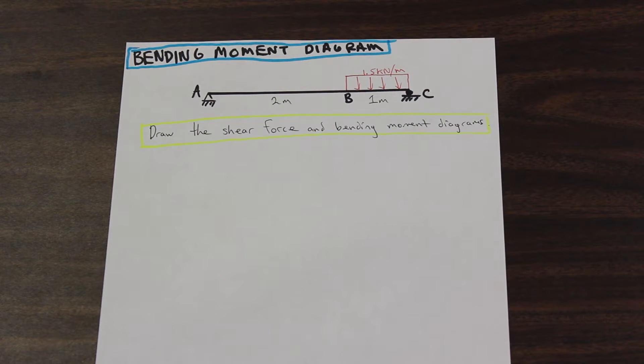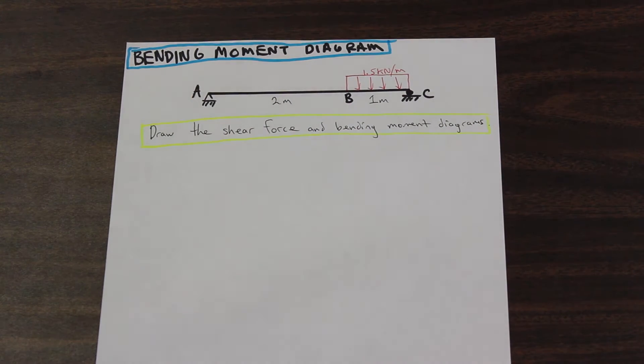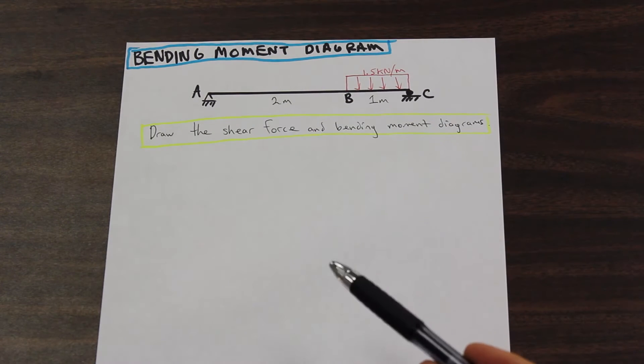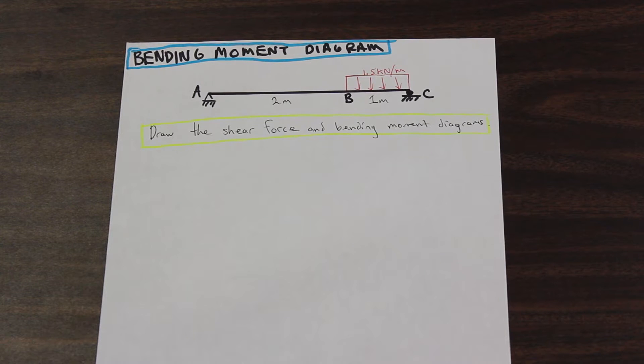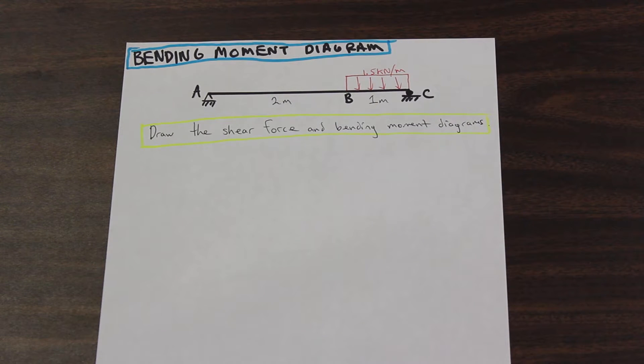How we're going to start a bending moment diagram is first we're going to take a look at what's given to us. And let me also start by saying that this is really important. This is going to come up in the next series in strengths and materials, it's going to come up in structural analysis, and you're going to have to be really good at solving bending moment diagrams. That's a really integral part of being a civil engineer.